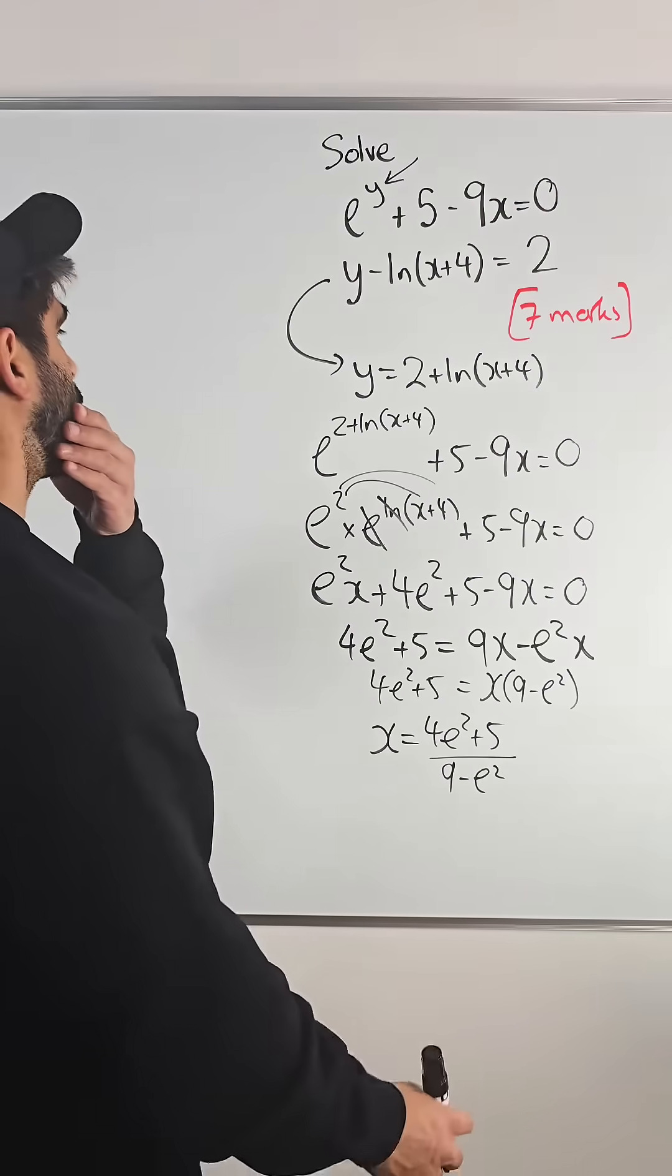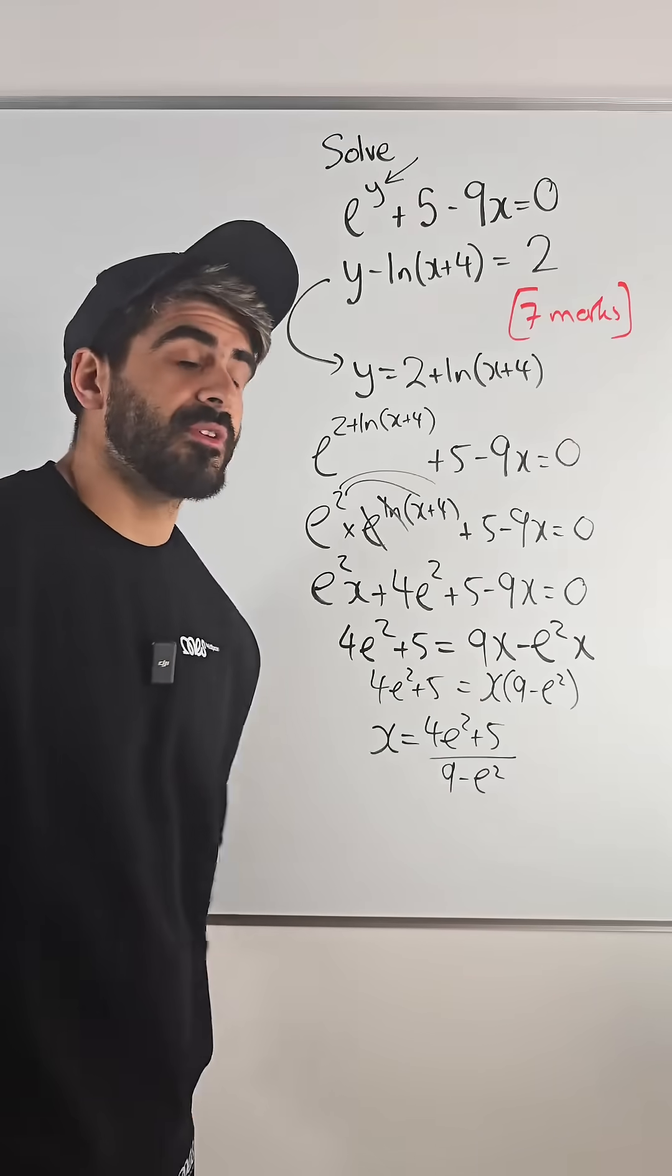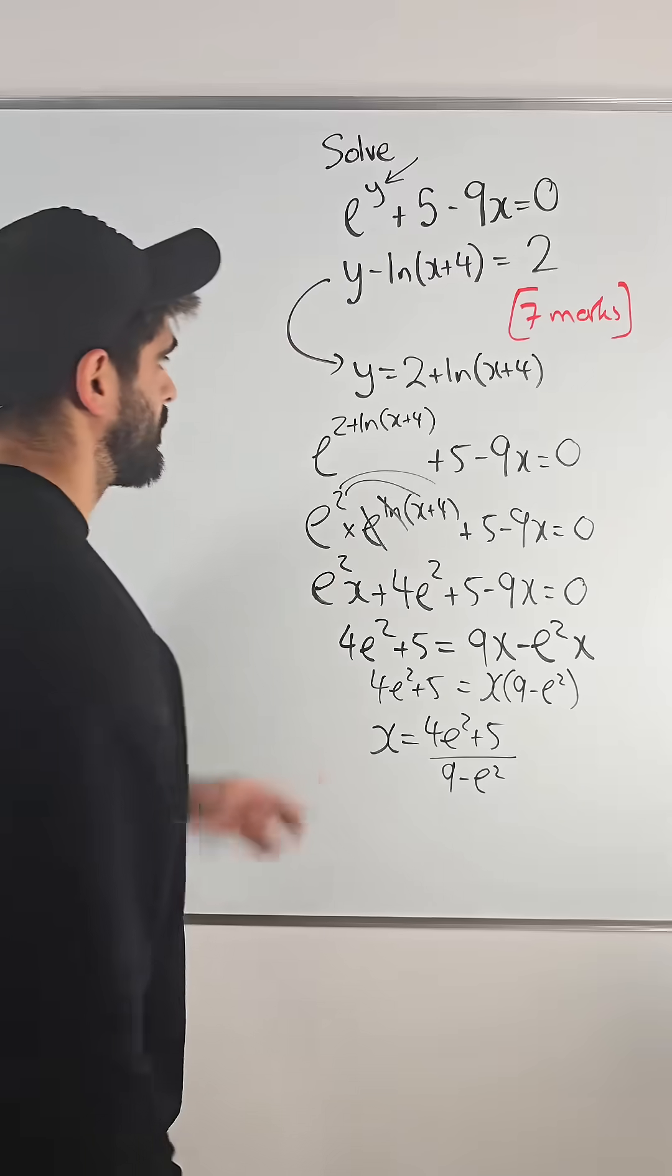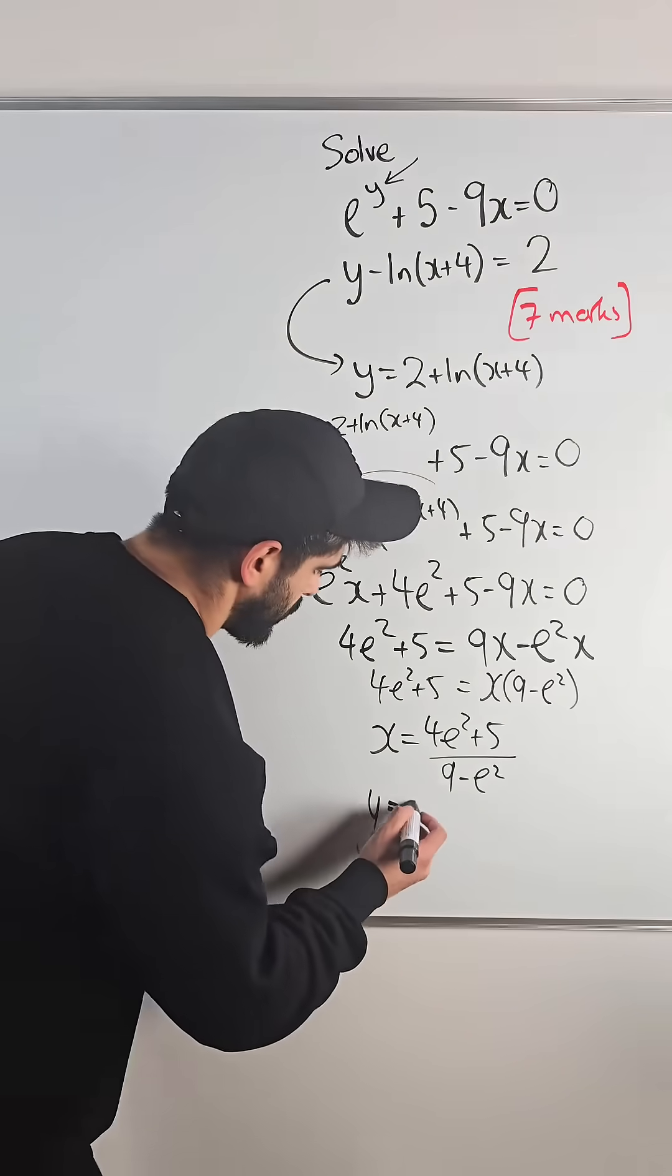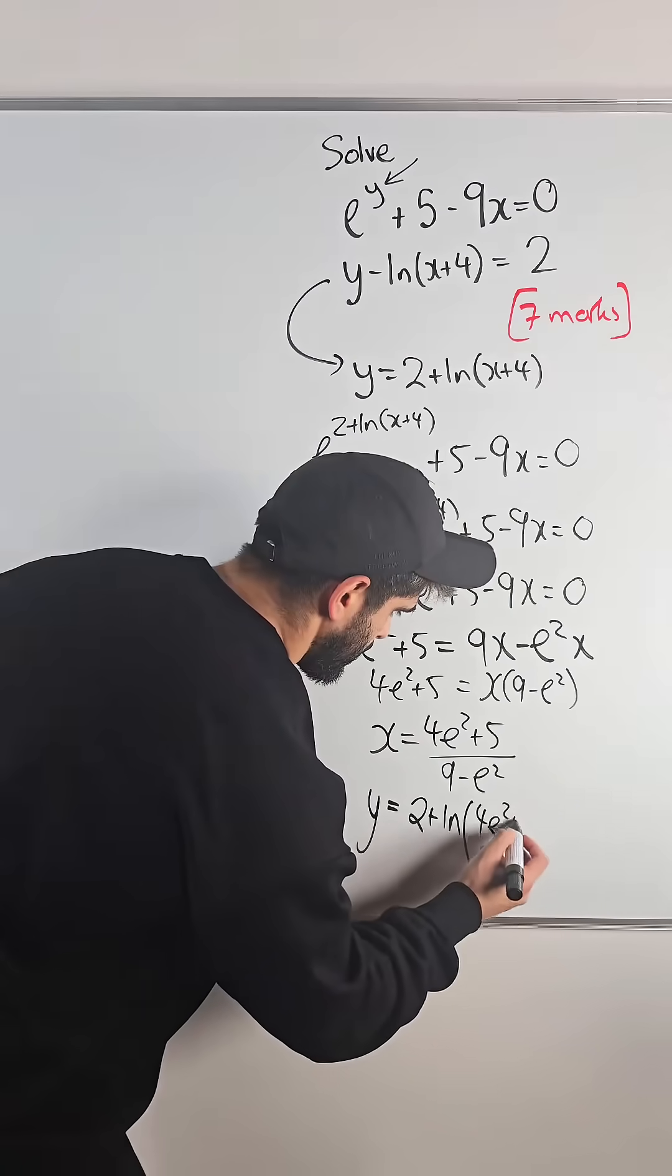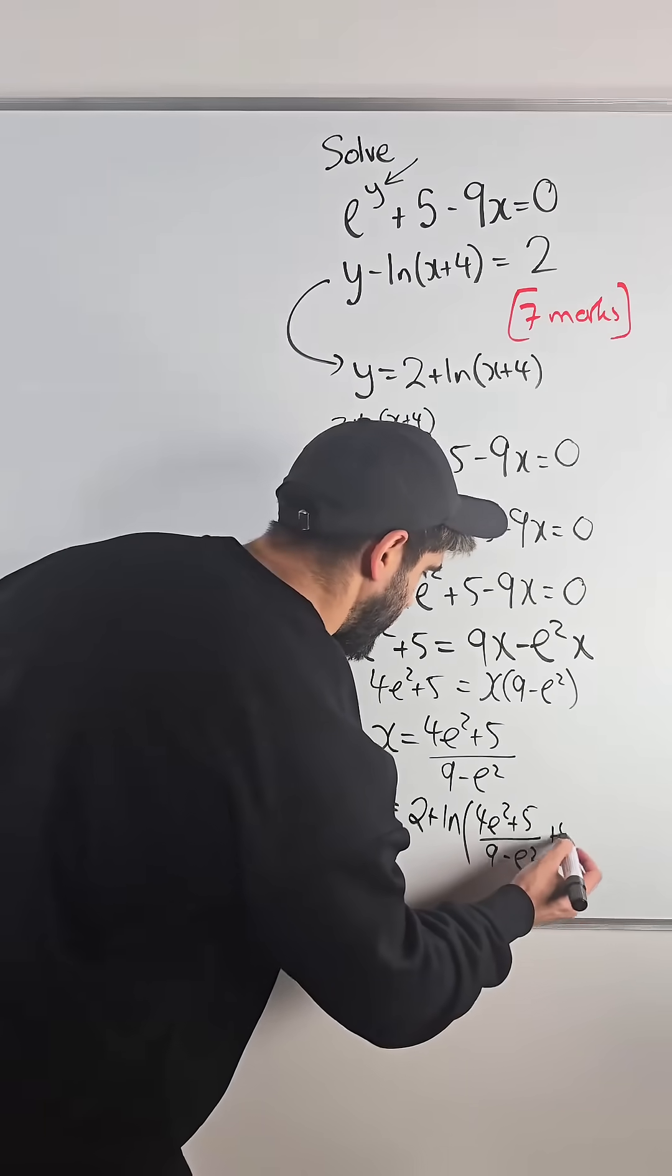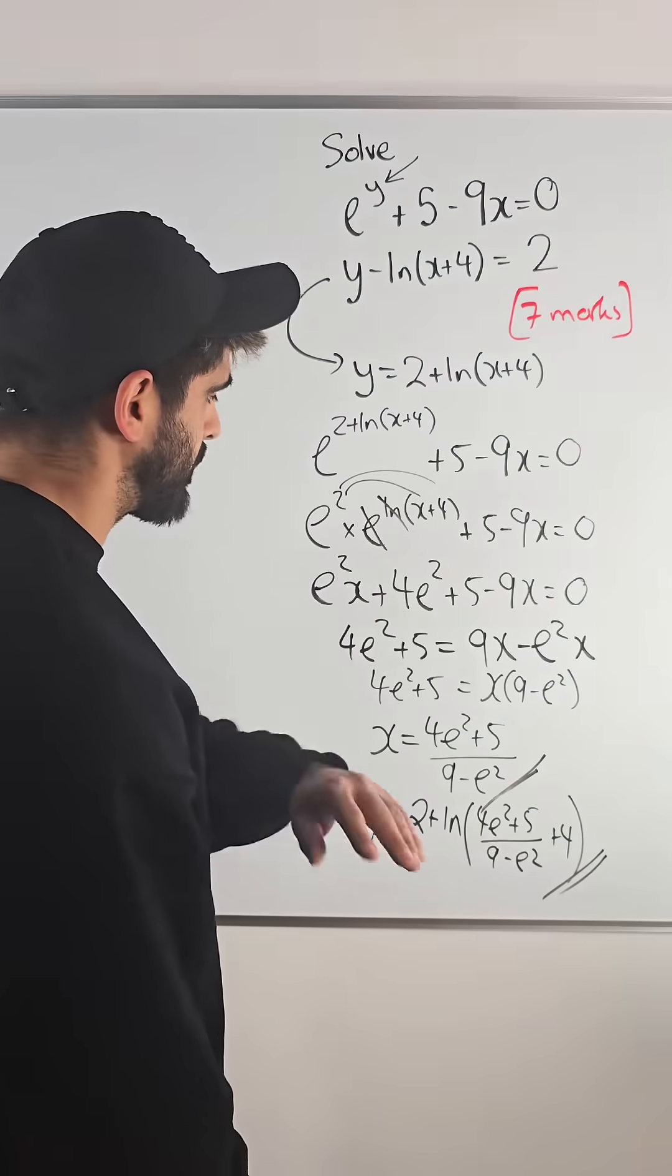Now in order to solve, the question did actually say to put your answer as an appropriate degree of accuracy. I mean my calculator is over there, I'm not typing all that. So y is 2 plus ln of x which is this, x over 9 minus e squared plus 4. And as your homework guys, you can type that in if you can be bothered. I'm happy with that solution.